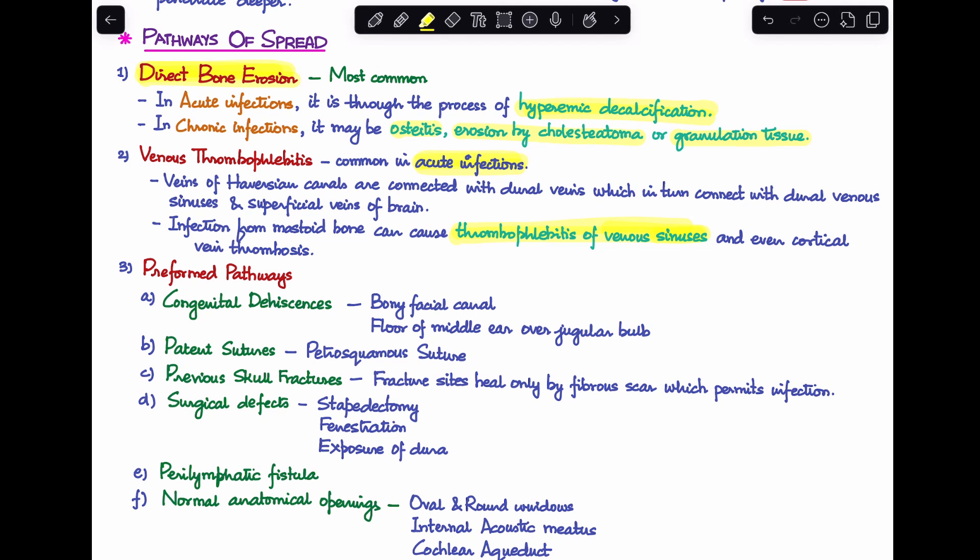And this can even spread to involve the cortical veins and lead to its thrombosis. So this is the second pathway which is more commonly seen in case of acute infections. Third is the preformed pathways that already exist. Now these can be of different types. First is congenital dehiscences like dehiscence of the bony facial canal or dehiscence of the floor of the middle ear over the jugular bulb. Second is the presence of patent suture like the petrosquamous suture.